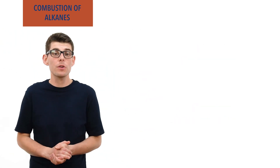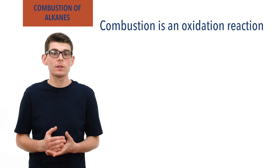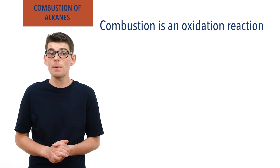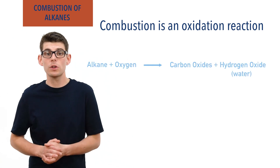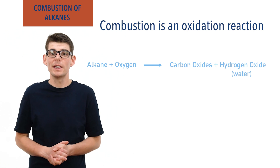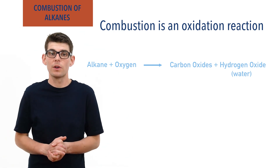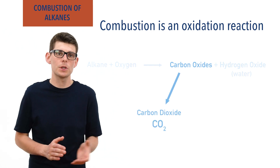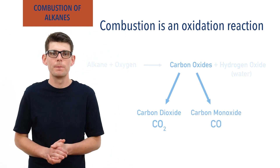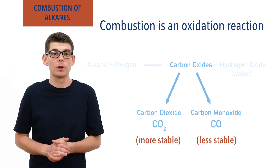A combustion reaction is effectively oxidation. Atoms in the combustion molecule will form new bonds with oxygen and oxides of them are formed. For alkanes, this means carbon atoms gain bonds with oxygen to form carbon oxides, and hydrogen atoms gain a bond with oxygen forming water. The hydrogen in an alkane will always react with oxygen to form water, H₂O, in a combustion reaction, as H₂O is the only stable oxide of hydrogen that can be formed. Carbon, however, can form two different oxides: carbon dioxide, CO₂, and carbon monoxide, CO. Both are stable molecules that can be formed in combustion, although carbon dioxide is more stable than carbon monoxide and as a result is always the preferred product of carbon combustion.